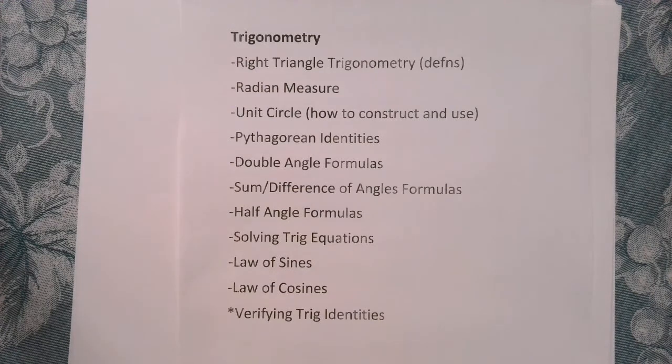The classic Pythagorean identities like sine squared theta plus cosine squared theta equals one, etc. And you should know the double angle formulas, in particular for sine and cosine. The sum and difference of angles formulas for sine and cosine. Half angle formulas for sine and cosine. You should know how to solve trig equations. That's huge. Law of sines, law of cosines. And the last one I actually starred.